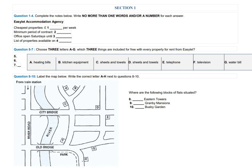Section 1. You will hear a woman calling an accommodation agency about properties to rent. First, you have some time to look at questions 1 to 4. You should answer the questions as you listen, because you will not hear the recording a second time. Listen carefully to the first part of the conversation, and answer questions 1 to 4.